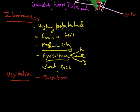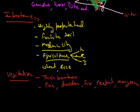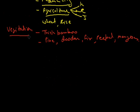The main vegetation found in this region includes thick bamboo, pine, deodar, teak, peepal, mango, and others.